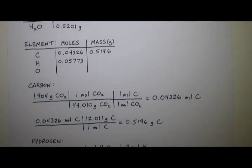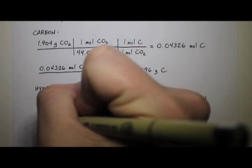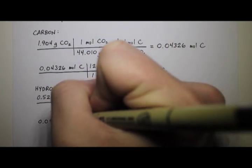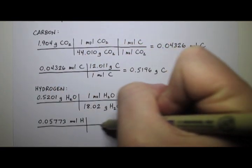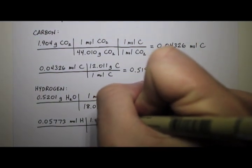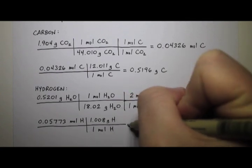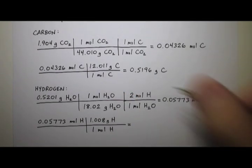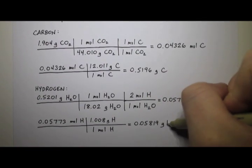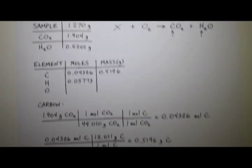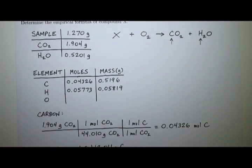What do we have next? Oh yeah, the mass of hydrogen. We have the moles of hydrogen. We can get the mass of hydrogen pretty easily. 0.05773 moles of hydrogen. And let's see, 1.008 grams of hydrogen are in one mole of hydrogen. Again, from the periodic table. And we do this, you get 0.05819 grams of hydrogen. Let's put that up here. 0.05819.